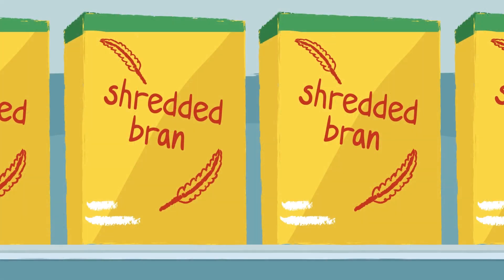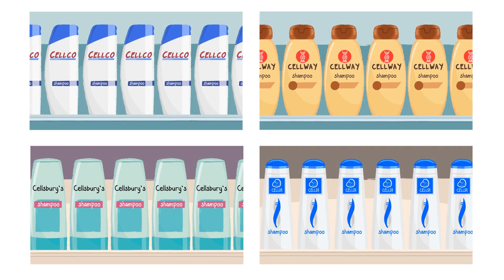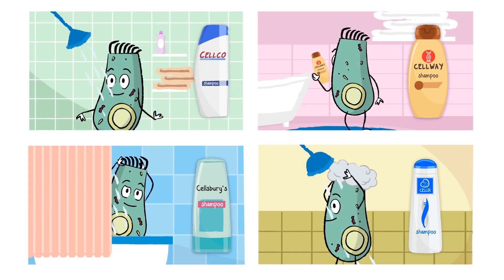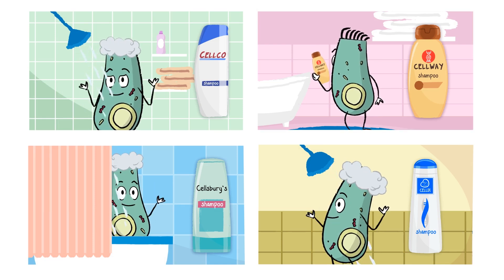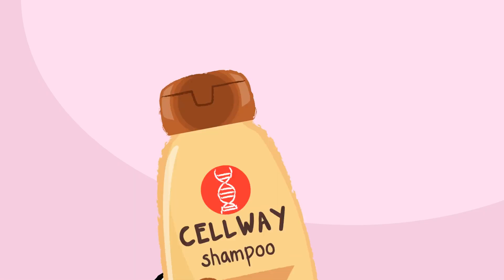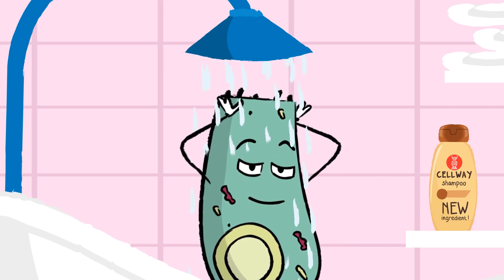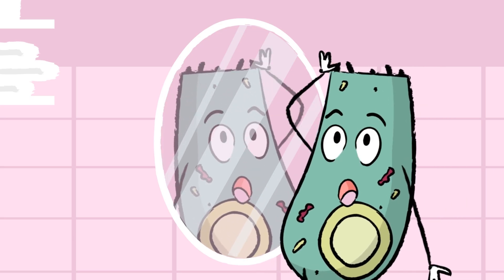In real life, different supermarket chains sell the same things but don't necessarily stock exactly the same brands. In the same way, people's supermarkets can stock different versions of the same products. Most of the time, the differences between products are tiny, and the cells don't even notice them. But occasionally, a product is very different, and cells find it doesn't work as it should. This is important because it might affect the way those cells do their job in the body.